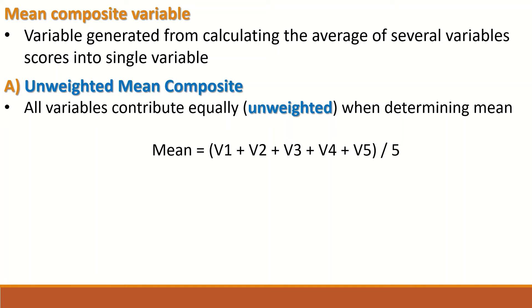We have either an unweighted mean composite or a weighted mean composite. In an unweighted mean composite, all variables contribute equally — unweighted — when determining the mean. So all variables contribute an equal fraction when determining the mean.